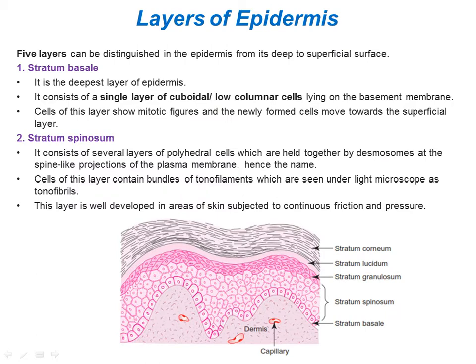There are 5 layers in the epidermis. The first is the stratum basale, which is the deepest layer. It has a single layer of cuboidal or low columnar cells lying on the basement membrane. These cells have the property of mitosis — mitotic figures are very actively shown here — and newly formed cells move towards the superficial layer.